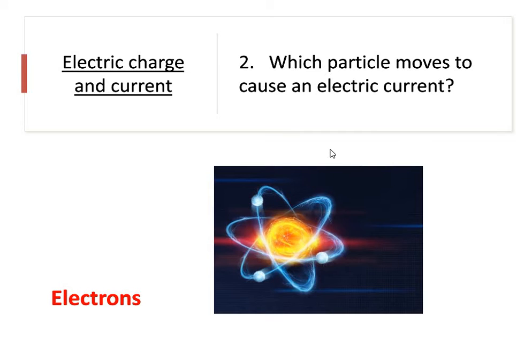Our second point, our second key thing, which particle moves to cause an electric current? It's an electron. So the movement of an electron is what actually causes electrical current to flow. So that's your second point that I'd like you to take down.